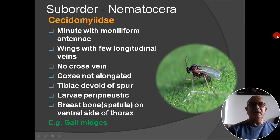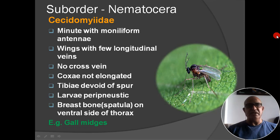Next family: Cecidomyiidae. These insects are small; antenna moniliform; wings with few longitudinal veins; no cross veins; coxa not elongated; larvae are peripneustic type; breast bone (spatula) present on ventral side of thorax. Example: gall midges.